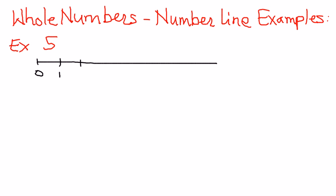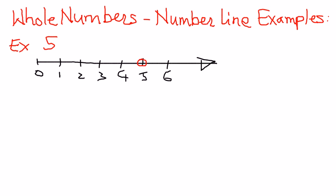We mark 1, 2, 3, 4, 5, and we'll go up to 6. We put an arrow here indicating that the number line can continue on for a long period of time. On this number line, we want to indicate where 5 is occurring. So we count 5 from 0, and this is where we want to be.